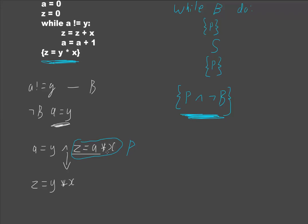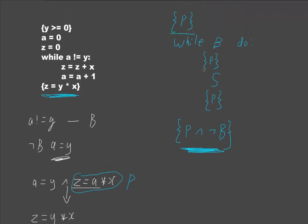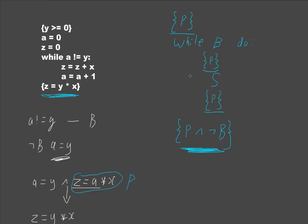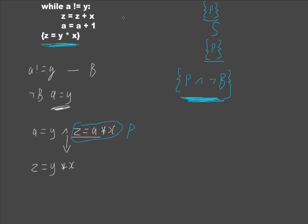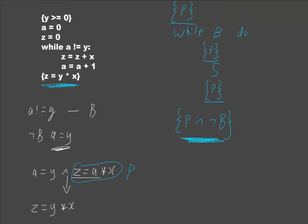And now, if I can prove that z equals a times x is true, at this location, this location, and this location, then it is an invariant by induction, and then that is my partial correctness proof for the entire algorithm. So, I'll go through the steps for that next.